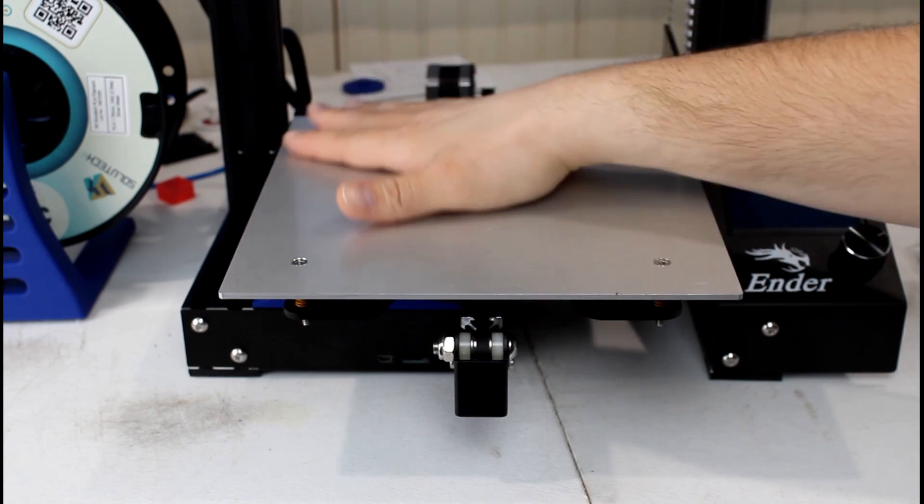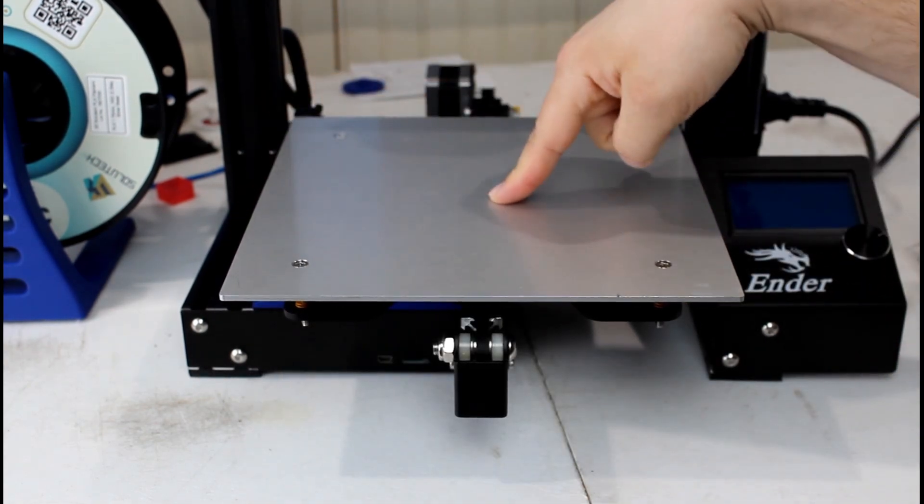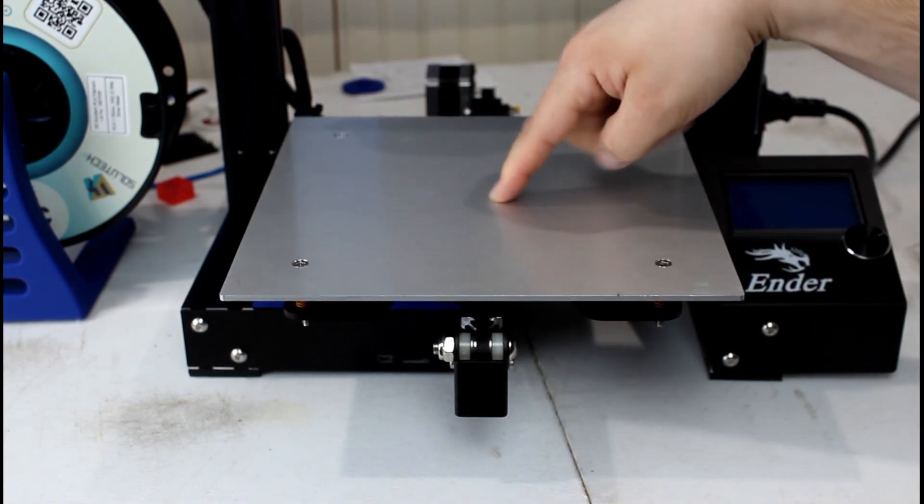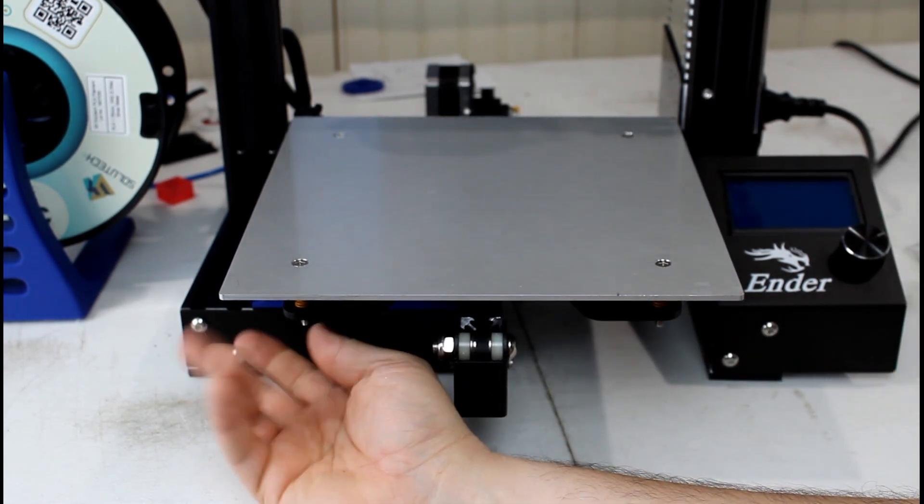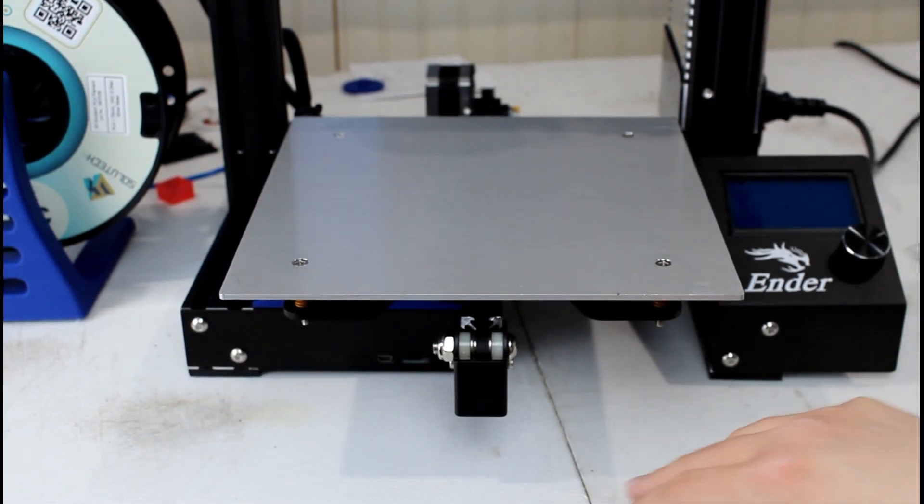Okay, so the first thing you want to do is go ahead and remove the bed surface if you have one on. I took my glass off. The next thing you want to do is go ahead and remove the wheels from the bottom, and I've done that as well.